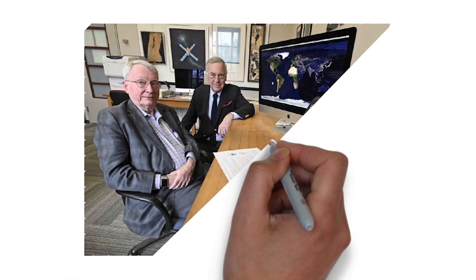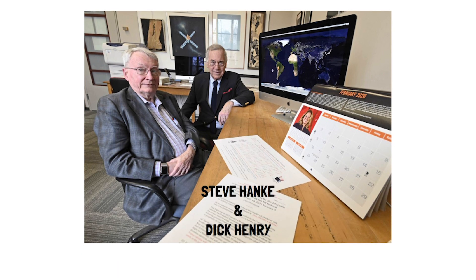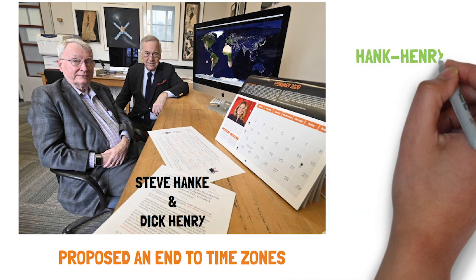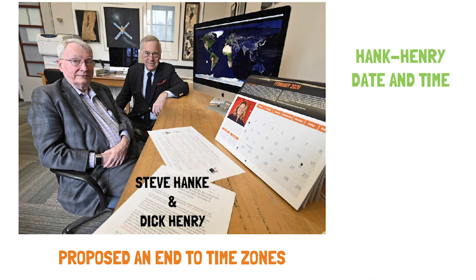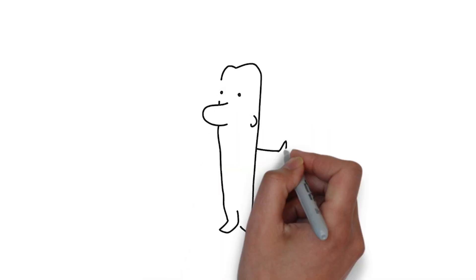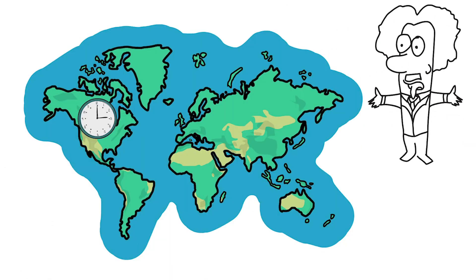Economist Steve Hanke and astronomer Dick Henry have been very vocal in proposing an end to time zones, something they would replace with a system aptly named the Hanke-Henry Date and Time. After all, they argue, from a physics standpoint, it's always the same time everywhere in the world.